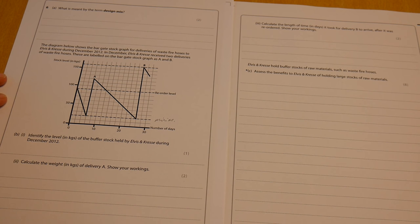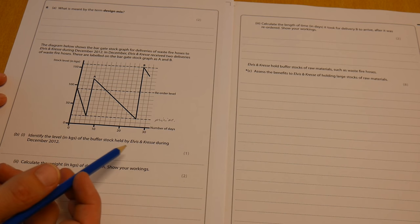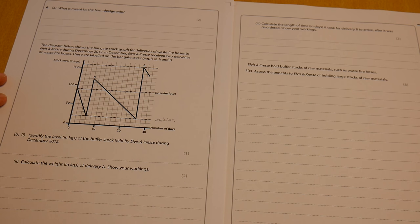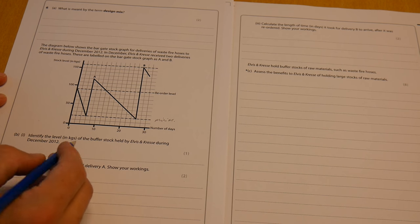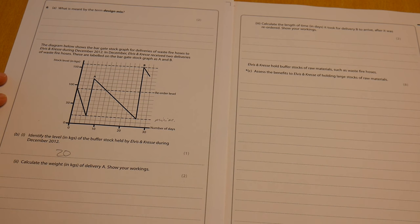So identify the level in kilograms of the buffer stock held by Elvis and Kress during December 2012. We can see we've got 50 here. This is all in kilos, and we can see that each of these little blocks represents 10 kilos. So therefore, we should have an answer of 20 kilos.